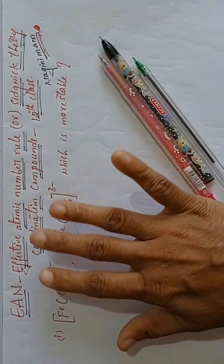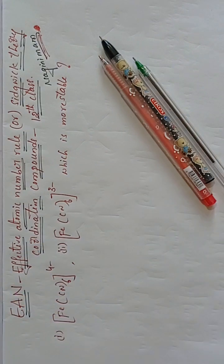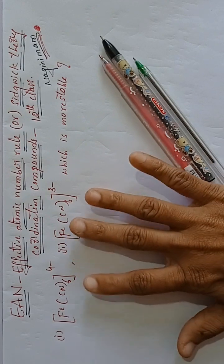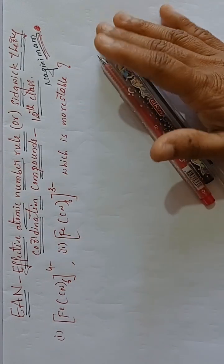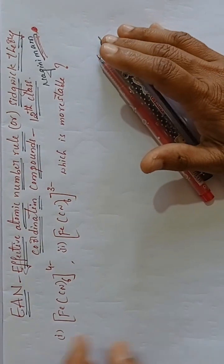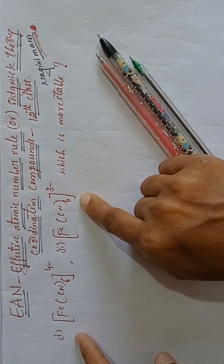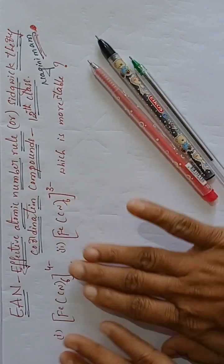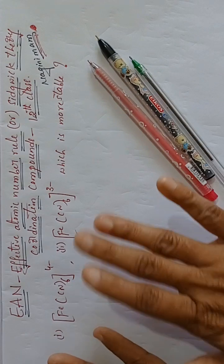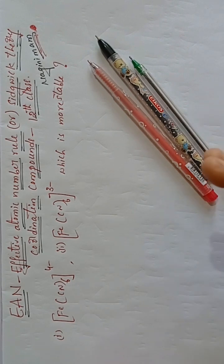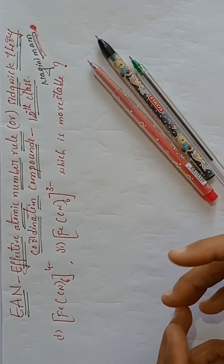From this topic, EAN, we can calculate and determine which Coordination Compound Ion is more stable. By using this EAN rule, we can easily find which is more stable.